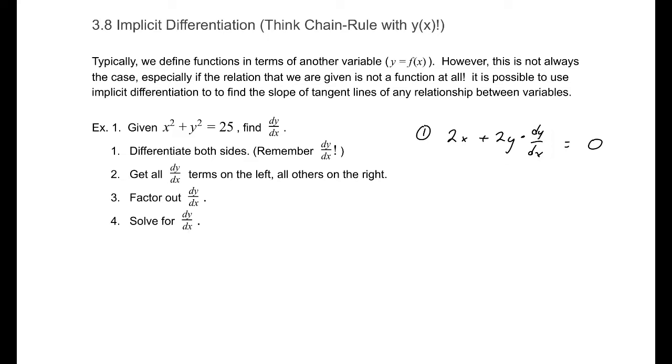Next, we want to get all dy/dx terms on the left and all the others on the right. So in this case, that's fairly straightforward. That would be 2y dy/dx equals negative 2x. We'll factor out dy/dx if we have to. In this case, we don't have to. And solve for dy/dx. So dy/dx equals negative 2x divided by 2y, or better put negative x over y.